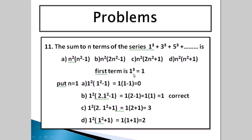Use the same procedure. The first term is 1 cubed, which equals 1. Check all four options with n equals 1: option A gives 0, option B gives 1, option C gives 3, option D gives 2. Since the first term must equal 1, option B matches. Therefore the answer is option B.